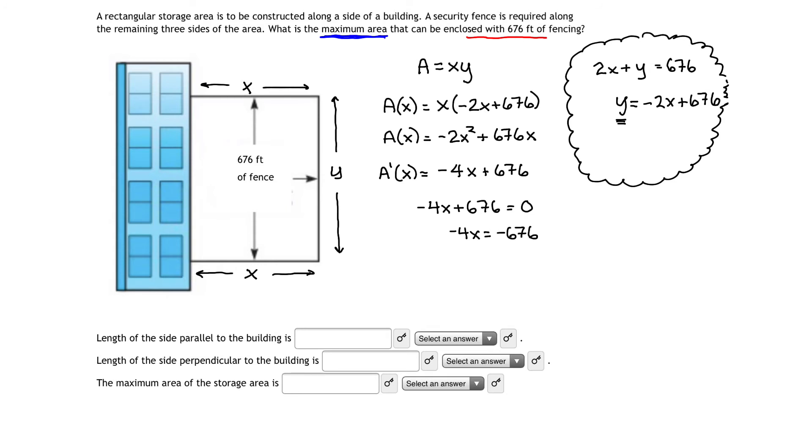Continuing to solve gives us that negative 4x equals negative 676. Dividing both sides by negative 4 gives us that x, our horizontal distance, is equal to 676 divided by 4, which is 169 feet.